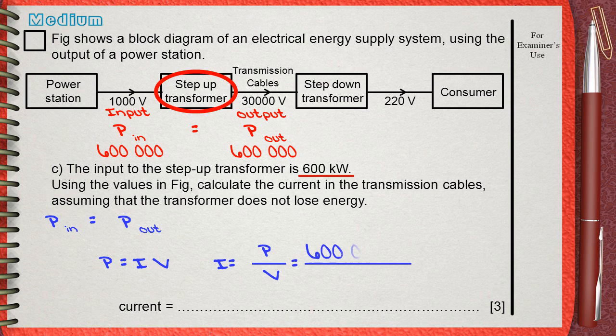The power on the output is 600000 watts, and the voltage on the output is 30000 volts. This means the current on the output will be 20 amperes.